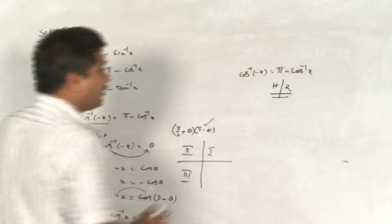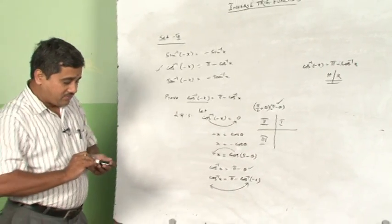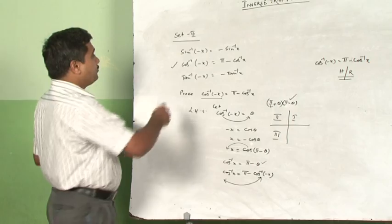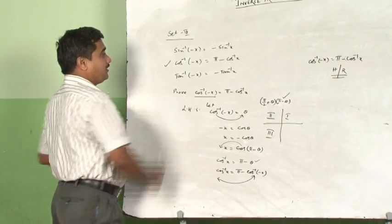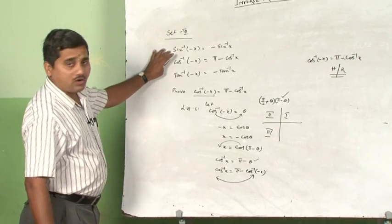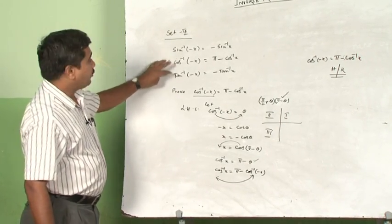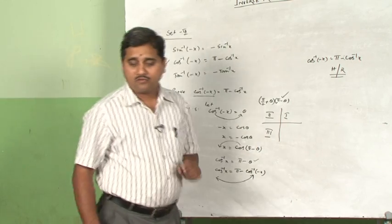In a similar fashion, you may also prove the remaining two. We know that sin is an odd function, followed by tan also being an odd function.